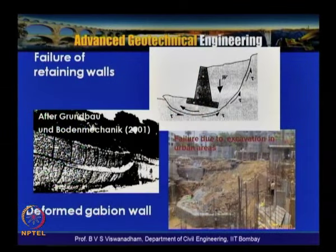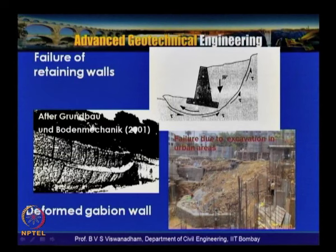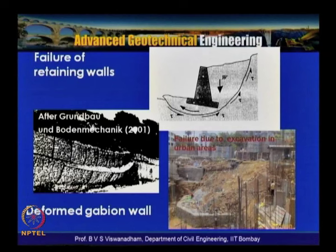Appropriate stabilization methods must be adopted to prevent these dangers. Gabion walls in urban areas can deform away from backfill. When a failure surface passes below a retaining wall, the wall itself may fail. Deep slope stabilization techniques such as piled slopes or retaining walls combined with piles can increase the factor of safety against slope stability failure.